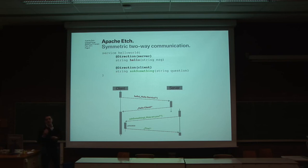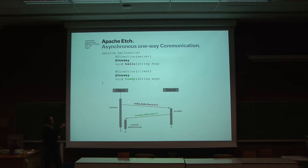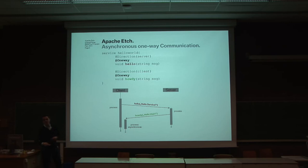This is really symmetric and makes it very convenient and easy to use — especially for interactive applications that require communication in both directions. You can also choose how your function calls are delivered. What I showed before is synchronous blocking calls that wait for a result. In Edge, you can choose whether those functions are blocking or not. If you don't want them to be blocking, annotate the function with 'one way'. What happens on the wire is asynchronous function calls — fire and forget. The server processes it, and because of the direction annotation, the server can also answer asynchronously.